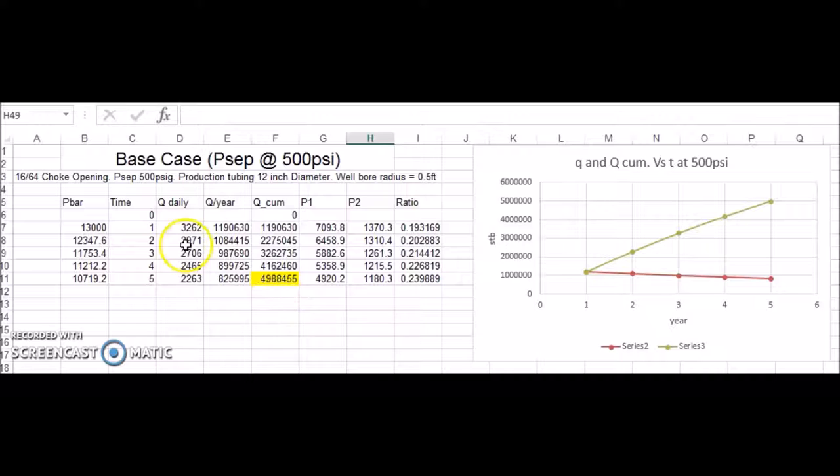Next, we ran the simulation in the Excel file. This is the results that we found. At 500 psi separator pressure, we had a cumulative production of just shy of our 5 million barrel limit. And that's after 5 years of production.